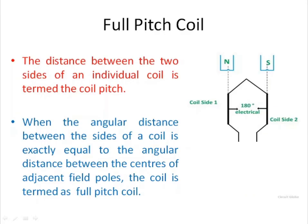Full pitch coil. The distance between two coil sides of an individual coil is termed as coil pitch. In a full pitch coil, the distance between two coil sides is 180 degrees electrical — that is, when the angular distance between the coil sides equals the angular distance between the centers of adjacent field poles. It is necessary to remember that the distance between two coil sides is 180 degrees electrical in the case of a full pitch coil.